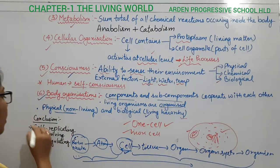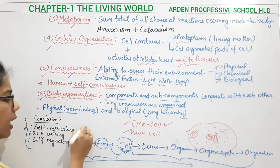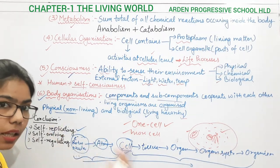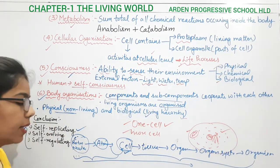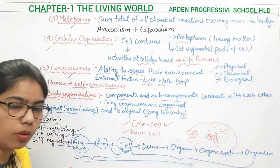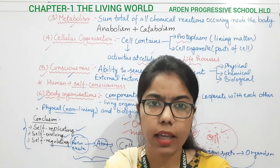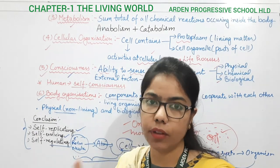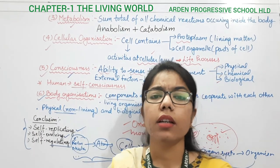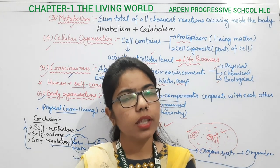In conclusion, growth and reproduction are characteristics of life but not defining properties. Metabolism, cellular organization, consciousness, and body organization are the defining properties. Life is self-replicating, self-evolving, and self-regulating. With that, we have completed the first topic. Thank you.